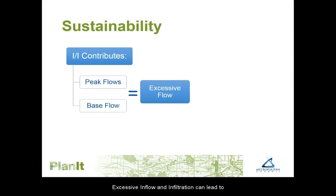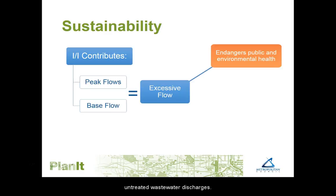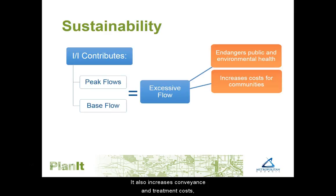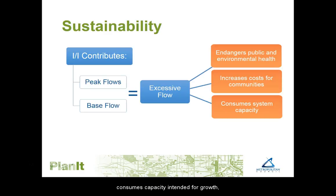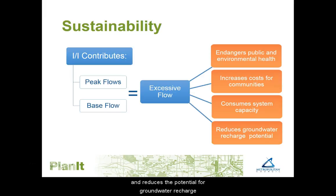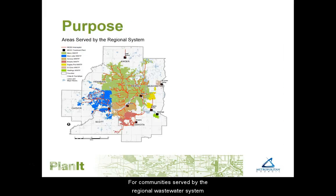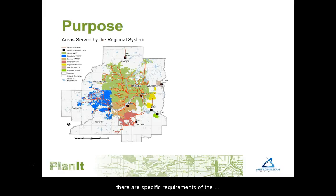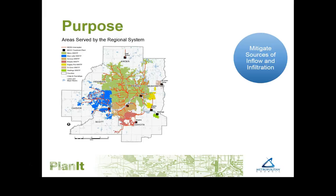Excessive inflow and infiltration can lead to untreated wastewater discharges. It also increases conveyance and treatment costs, consumes capacity intended for growth, and reduces the potential for groundwater recharge when clear water is removed from the natural hydrologic cycle. For communities served by the regional wastewater system or by a locally owned and operated treatment plant, there are specific requirements of the comprehensive plan to address inflow and infiltration.